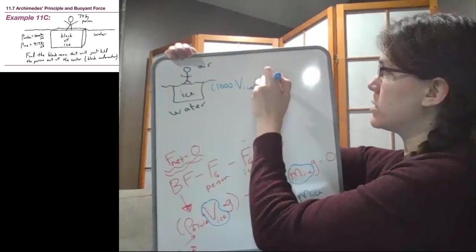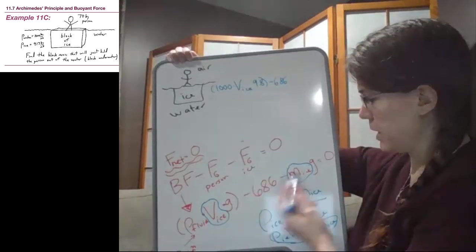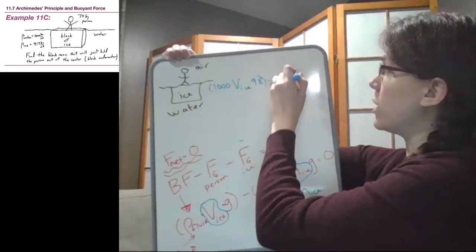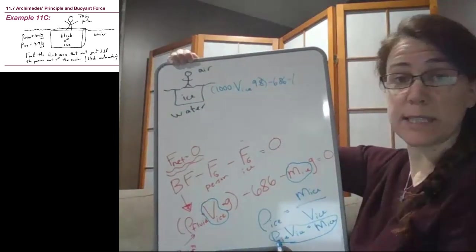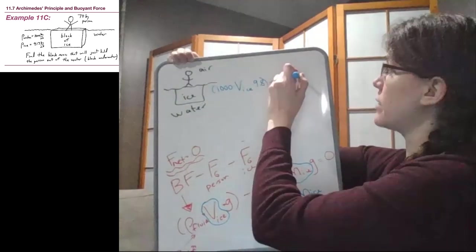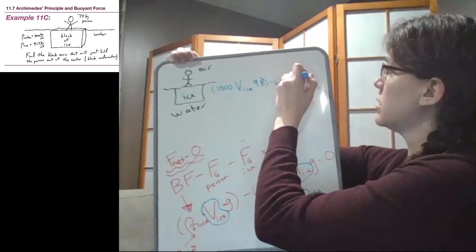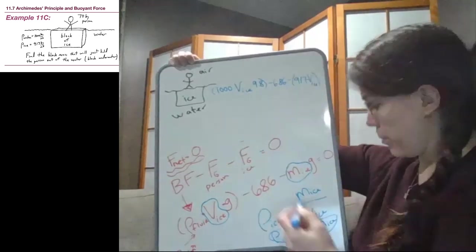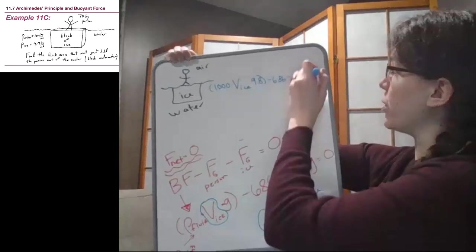The weight of the person is still 686. And then the mass of ice we are now rewriting as the density of ice, which is 917 times the volume, but also still times that 9.8.